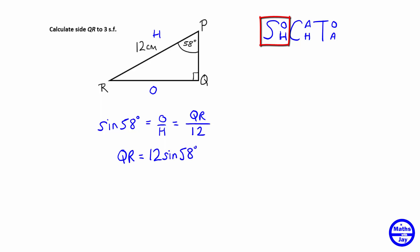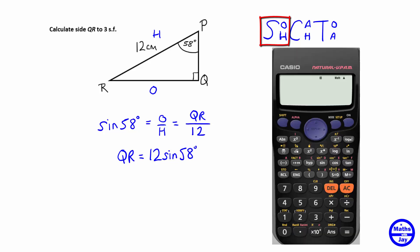And then we can just key that into our calculator so all we need to do is to check that we are in degree mode check that we've got the D showing up rather than a G or an R and then we simply key in 12 sine 58.